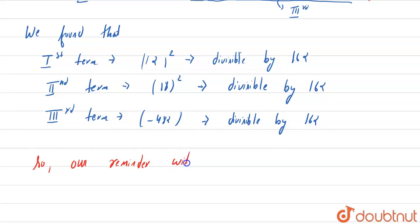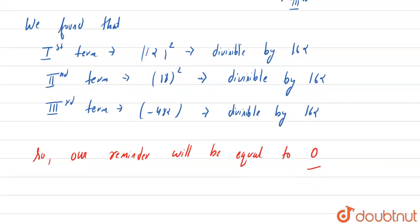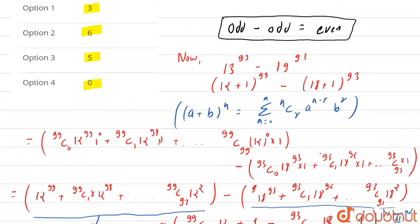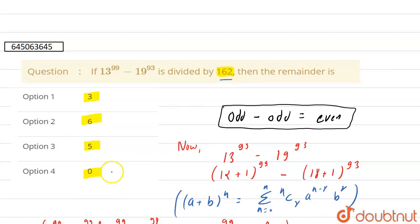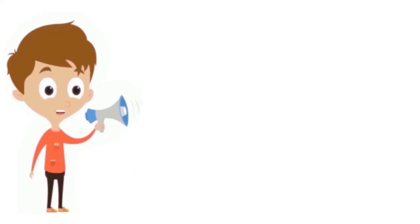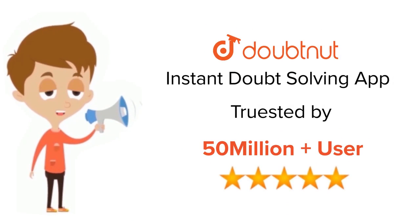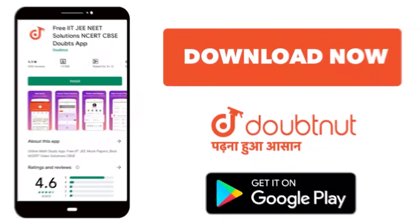So we can see that our first, second, and third terms are divided by 162, so our remainder will be equal to zero. So if we now see in the options, then our option 4 is correct. So this is it, guys. Thank you. For class 6 to 12, IIT-JEE and NEET level, trusted by more than 5 crore students. Download Doubtnut app today.